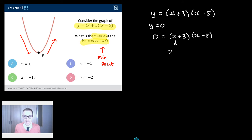So either x plus 3 equals 0 or x minus 5 equals 0. What value of x solves this equation? Well I think minus 3 is going to go down a treat there. What value of x solves this equation? x equals 5 is going to work.